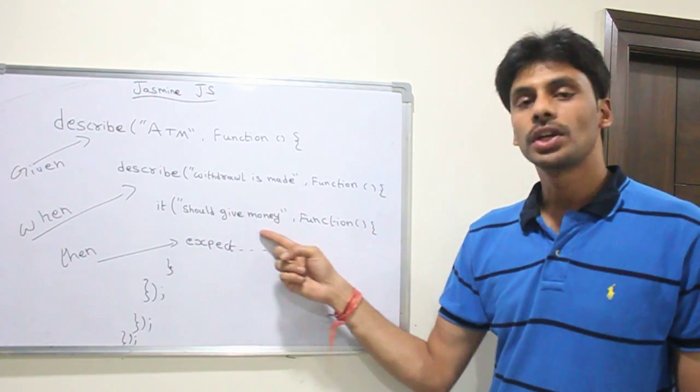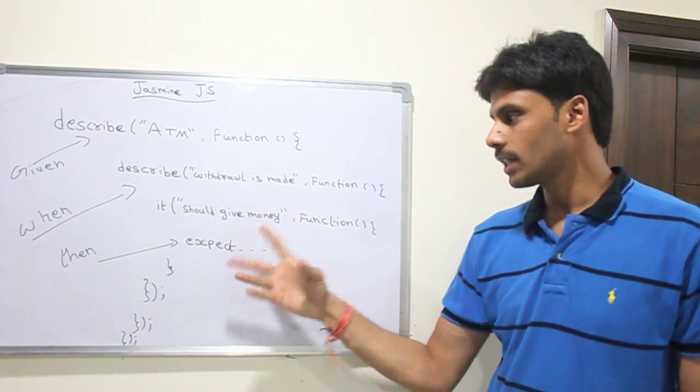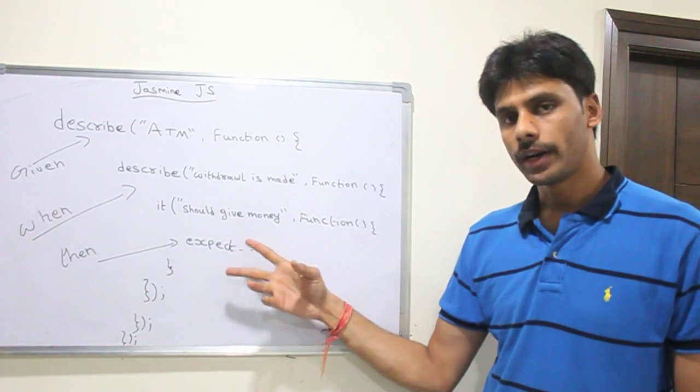Inside this, I'm saying should give money. And for that, I'm going to assert within this it block or it function.